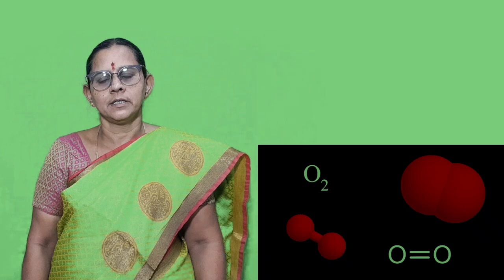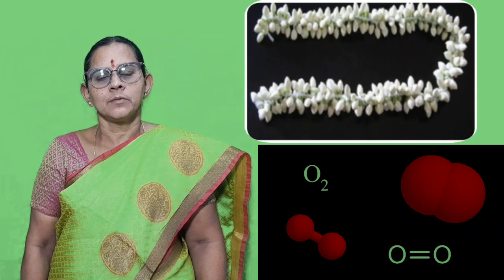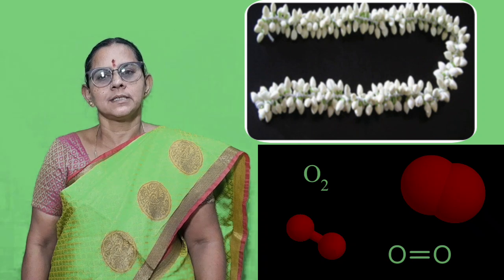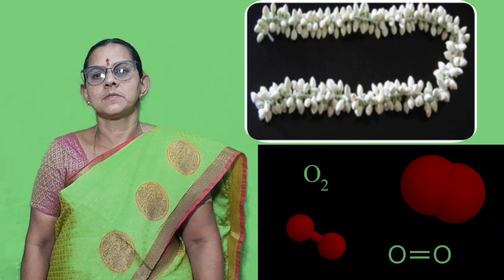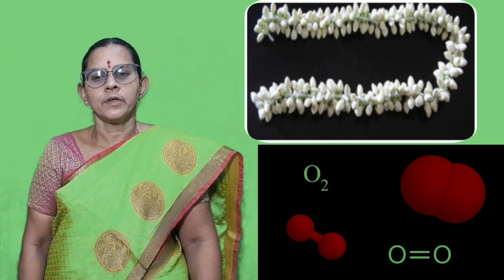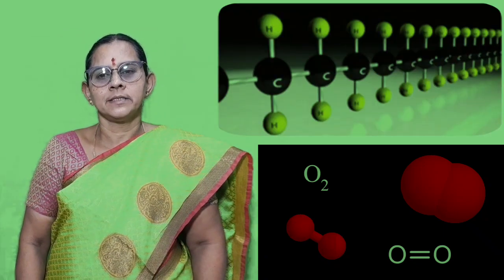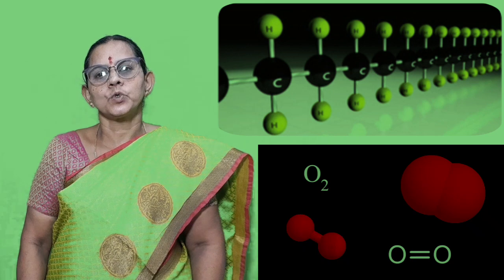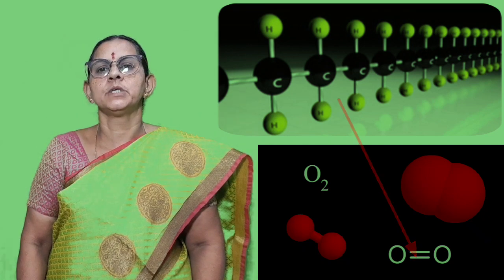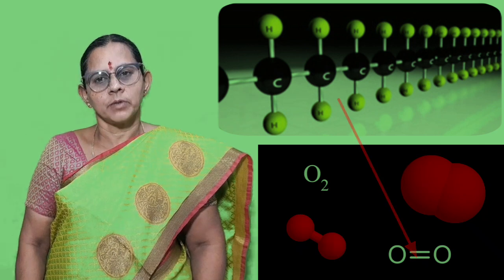Atoms exist and they are attracted by some force that brings them together as groups to form molecules. Coming to chemical bond, every atom and molecule is held together by means of electrostatic force of attraction that exists between atoms. That is chemical bonding.